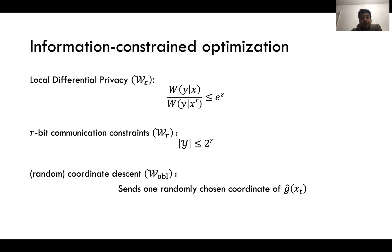Some examples of these information constraints are local differential privacy where each time the channel that you choose must privatize the gradient estimates, communication constraints where you just don't have enough bandwidth to send back the entire gradient and you must send only r bits of information, or random coordinate descent where you compute the gradient but you can only compute one of the coordinates of the gradient and send it back due to communication or computation constraints.